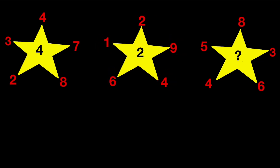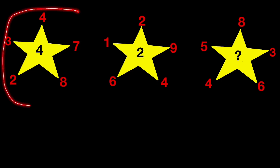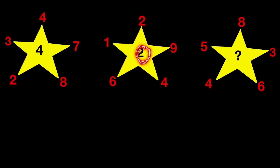In the center of the second star we have 2, and in the third star shape we have some numbers and we want to find out the central number. We have to use mathematical operations to find the missing number. You may think the answer is 8 because we have 8 in the outer numbers, but then what is the use of all the other numbers?